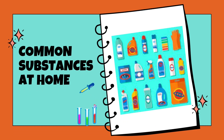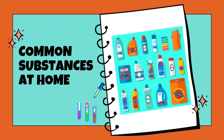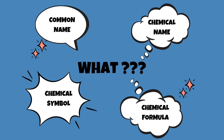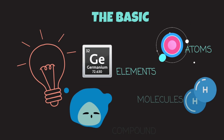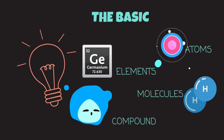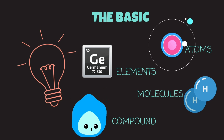Just like the chemical substances that we are going to tackle in a while, they do have names — or more accurately, a chemical name, common name, and symbols or chemical formula. But what do we mean by those? What is the difference between chemical name and common name, and what do we mean when we say chemical symbol or chemical formula?